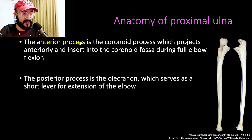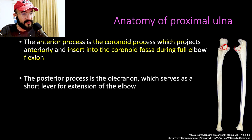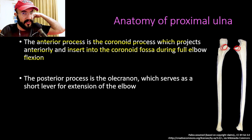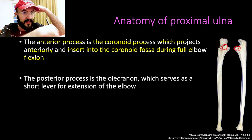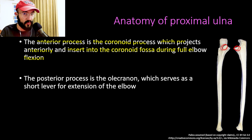The anterior process of the proximal ulna is the coronoid process, which projects anteriorly and inserts into the coronoid fossa during full elbow flexion. You can see the coronoid process on the anterior picture and on the medial view of the ulna. During full flexion of the elbow, the coronoid process inserts into the coronoid fossa of the distal humerus.